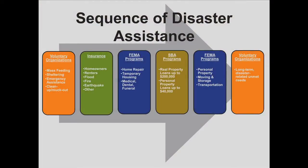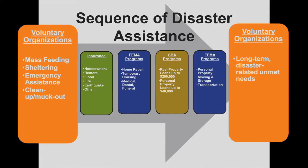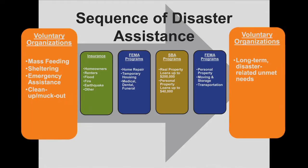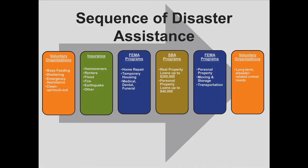As we look at the sequence of disaster assistance graphic, note that assistance from voluntary organizations is listed first and last. Assistance from a variety of volunteer groups may be available at different stages throughout recovery, including volunteer labor along with donations of materials and financial assistance.